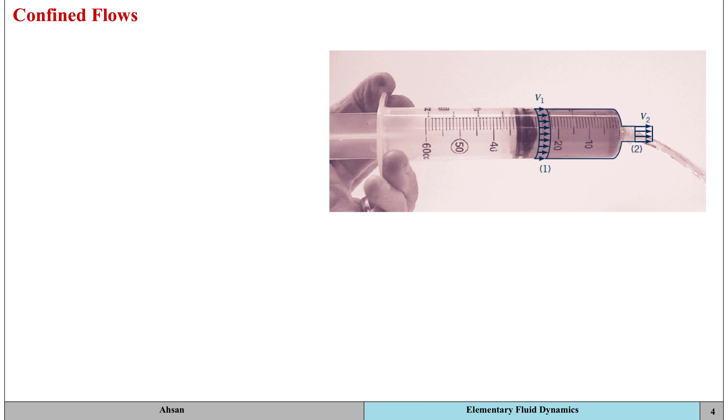Let's consider an example in which fluid is flowing through a fixed volume like the syringe that is being shown in this figure. It has one inlet and one outlet.